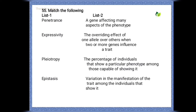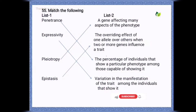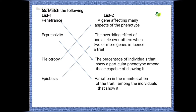Penetrance refers to the percentage of individuals that show a particular phenotype among those capable of showing it. Expressivity is the variation in the manifestation of the trait among individuals that show it. Pleiotropy refers to a gene affecting many aspects of the phenotype. Epistasis refers to the overriding effect of one allele over others when two or more genes influence a trait.